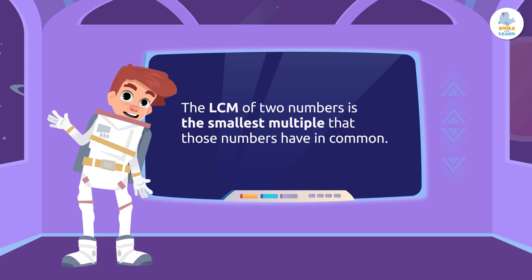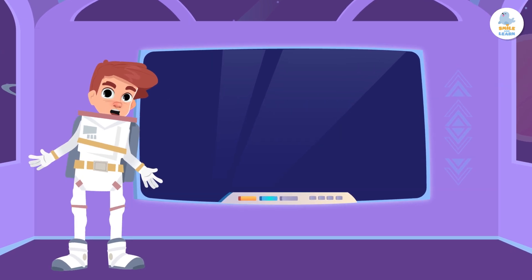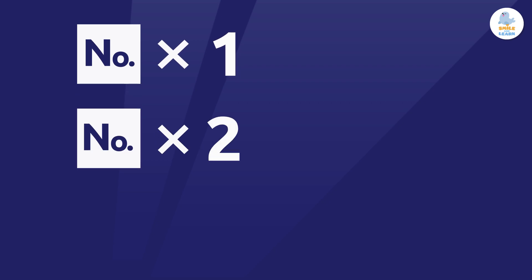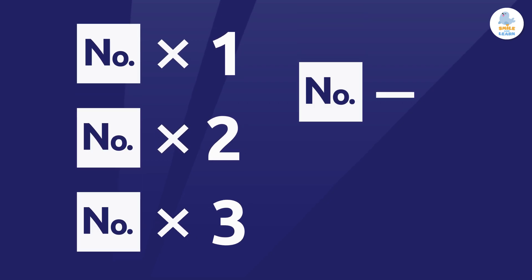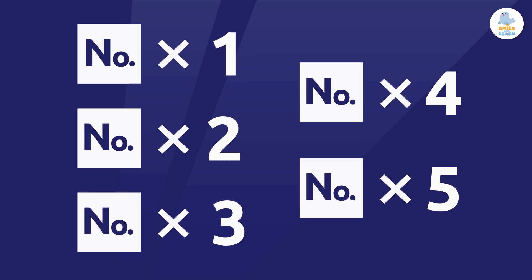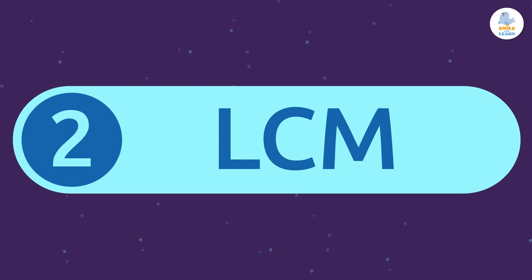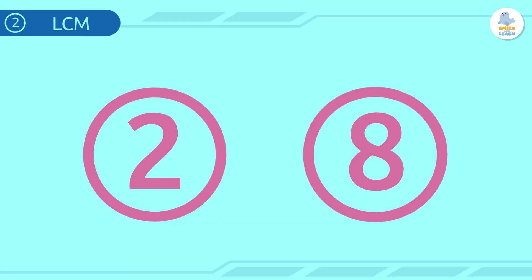One way is comparing the first few multiples of certain numbers. We'll multiply some numbers by 1, 2, 3, 4, and 5, write them down as we go, then identify the smallest multiple they have in common. Let's find the least common multiple of 2 and 8.